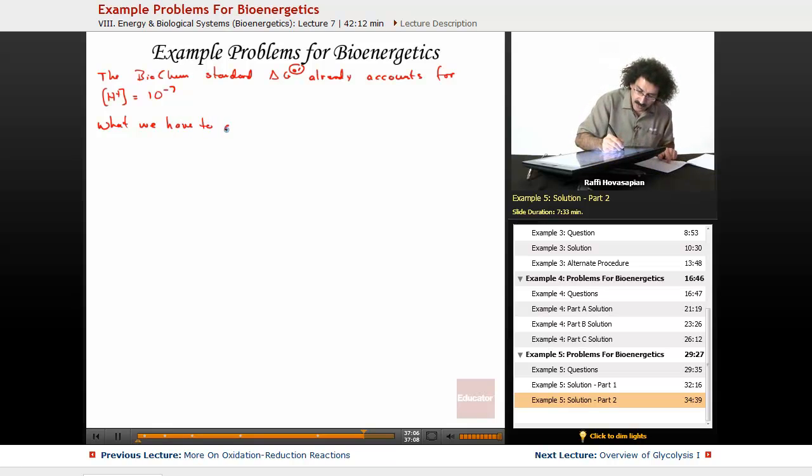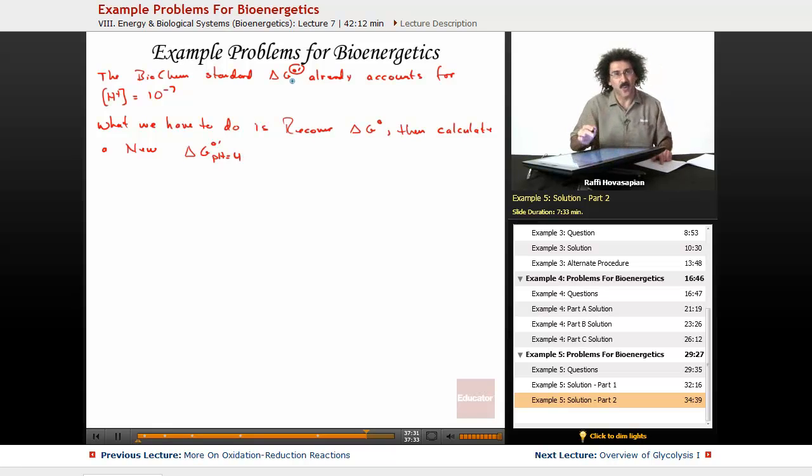So what we have to do is recover that delta G standard, then calculate a new delta G standard biochem at a pH equal to four. This pH seven, this pH four, it's a new biochemical standard. So let's go ahead and actually recover our delta G.